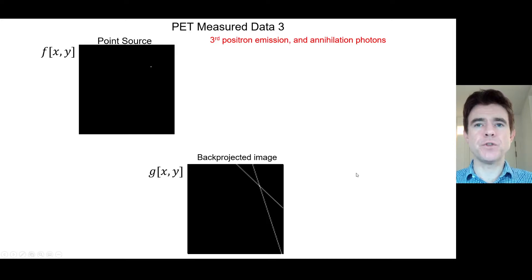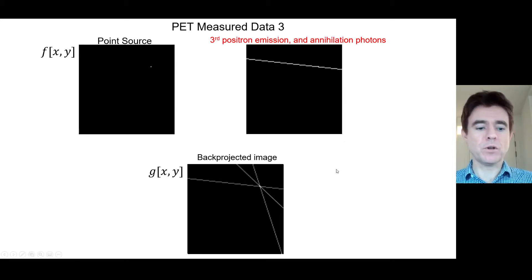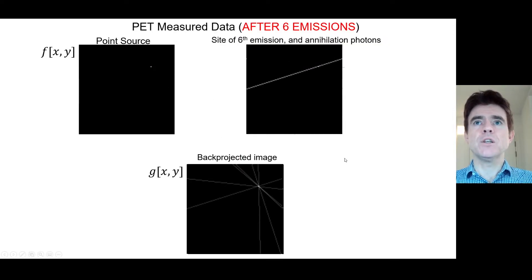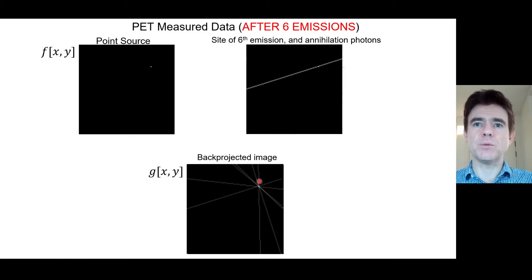Moving on to a third positron emission giving a back-to-back annihilation photon pair — these back-to-back photon pairs are isotropically emitted, the same intensity in all directions. For a third emission we get a third back-projected line, and we begin to see that they're intersecting at the point of the point source. After six such back-to-back photon pairs have been detected, we end up with six lines intersecting in the back-projected image.